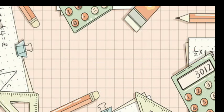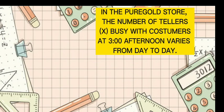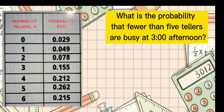Example number 3. In the Puregold store, the number of tellers busy with customers at 3 o'clock afternoon varies from day to day. Same situation with number 2. But the question is, what is the probability that fewer than 5 tellers are busy at 3 o'clock afternoon? In our inequality symbol, the word 'fewer than' is less than.